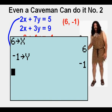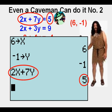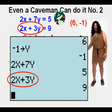We start our check by storing 6 for x and negative 1 for y. We enter the left side of the first equation, 2x plus 7y. And we see that since the answer is 5, it works out. Check. We now enter the left side of the second equation, 2x plus 3y. We see that both expressions equal 9, so it works. Check. 6 comma negative 1 is the solution to the system of equations. Kim, wherever you are, he did it again.